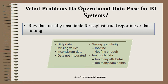What problems does operational data pose for BI systems? Raw data is usually unsuitable for sophisticated reporting or data mining. There is a lot of dirty data — data which does not make sense. You have missing values, inconsistent data where some columns have 20 entries, some have 1,000, some have 20,000. Data is not integrated — one column does not correlate with another. Wrong granularity — too fine or not fine enough — or too much data with too many attributes and data points where the significance of data is lost.